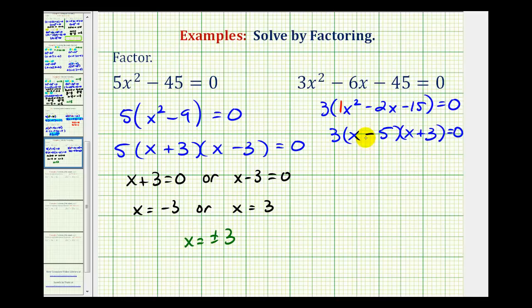This product will equal zero when x - 5 = 0 or when x + 3 = 0. Adding 5 to both sides gives x = 5, or subtracting 3 on both sides gives x = -3.